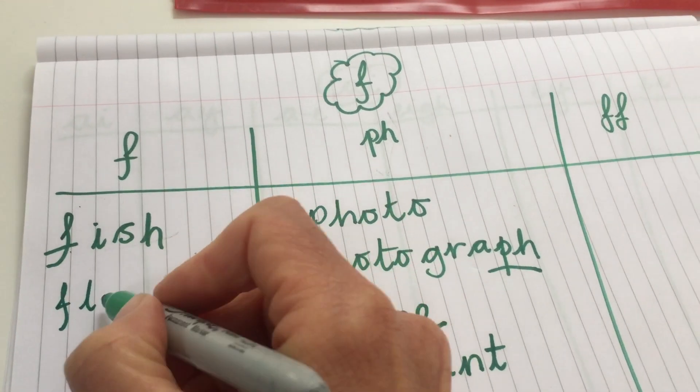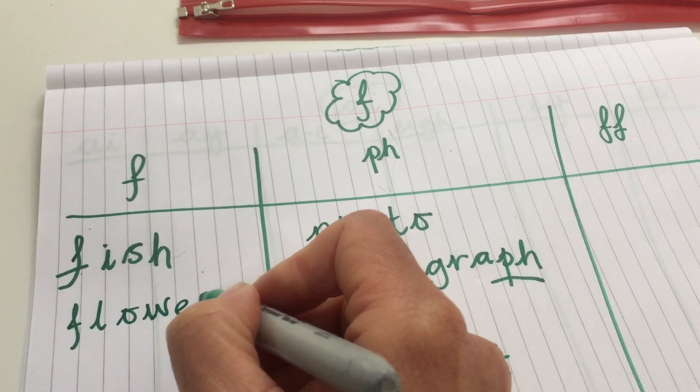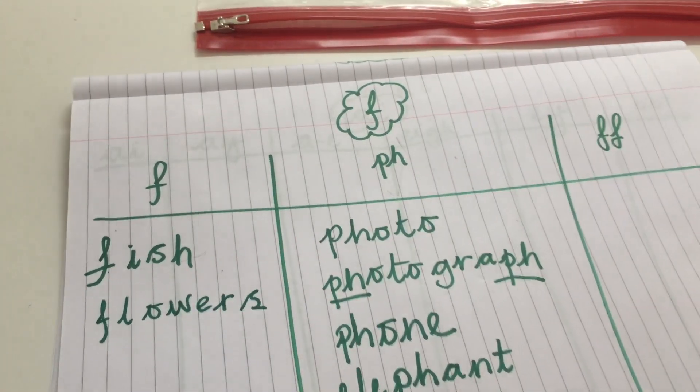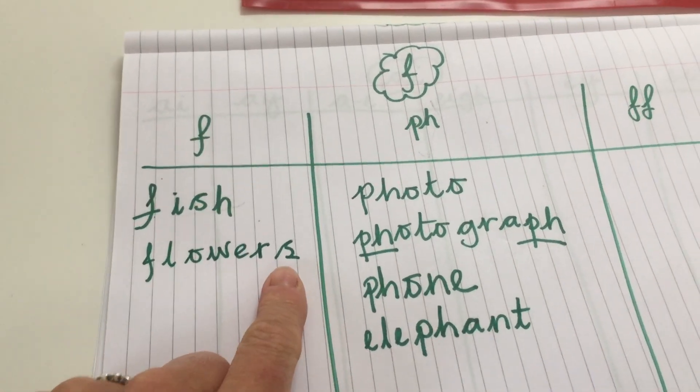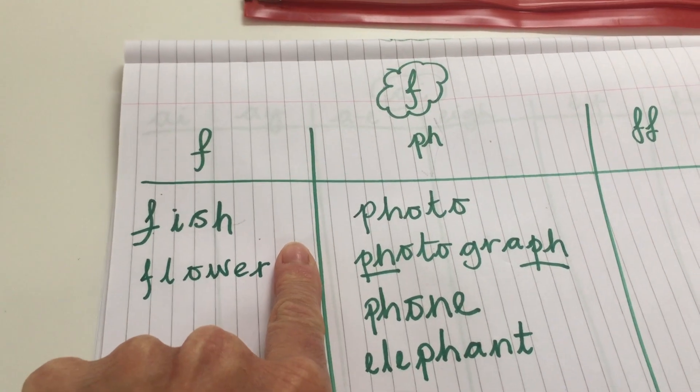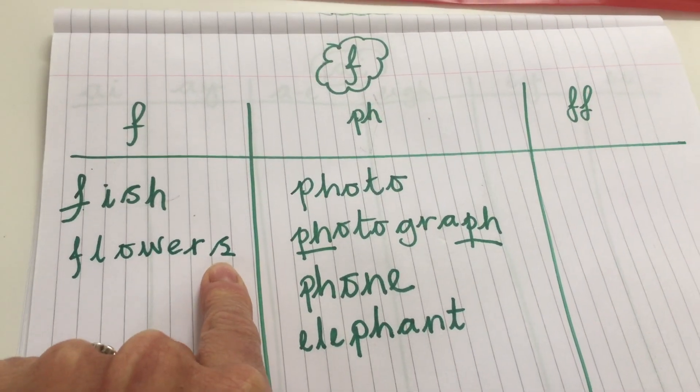And it's the F-L-O-W-E-R-S. Plural, so we're adding the S. If it was one flower, it would look like this. But there's lots of flowers, so it's going to have the S. Well done.